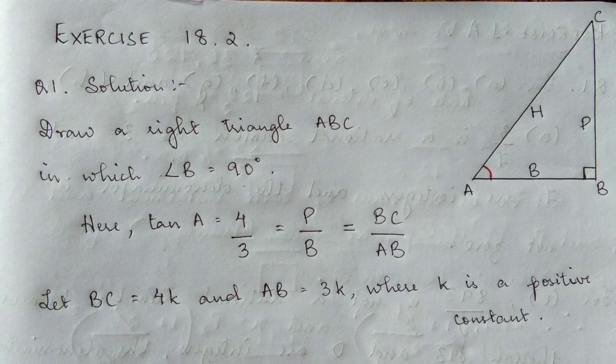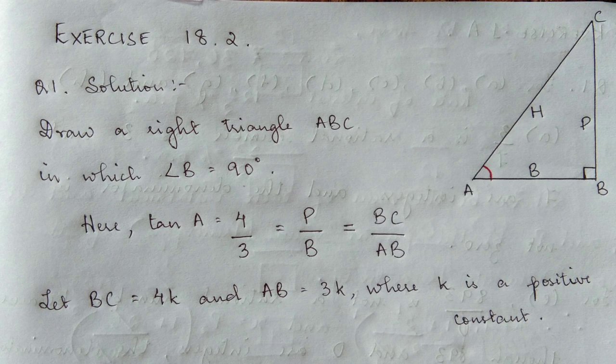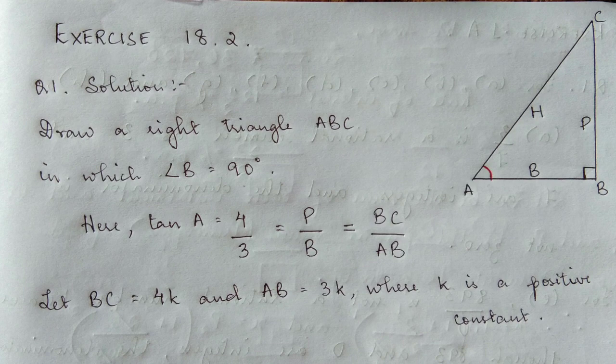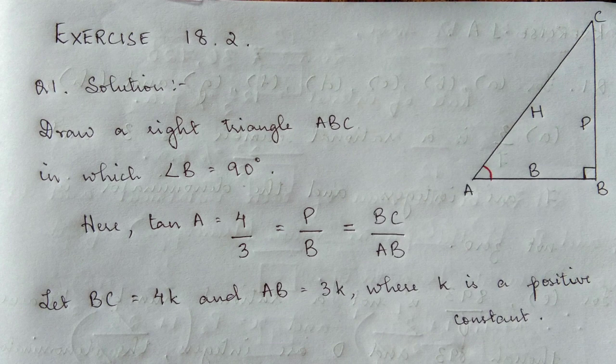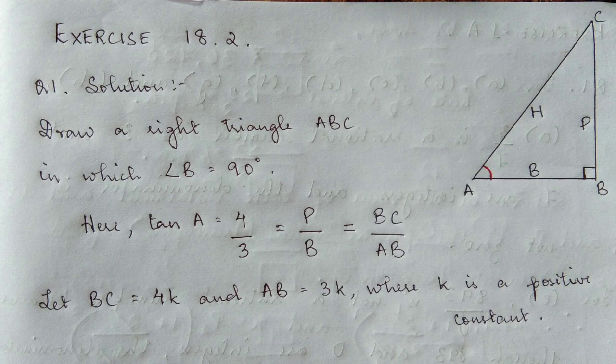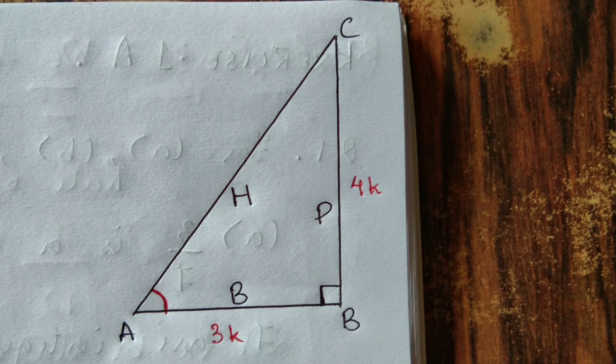Since BC by AB equals 4 by 3, we have BC equals 4 and AB equals 3. But we cannot simply say BC equals 4 and AB equals 3, because they are in a ratio. We need to introduce a constant. Let BC equal 4k and AB equal 3k, where k is a positive constant.